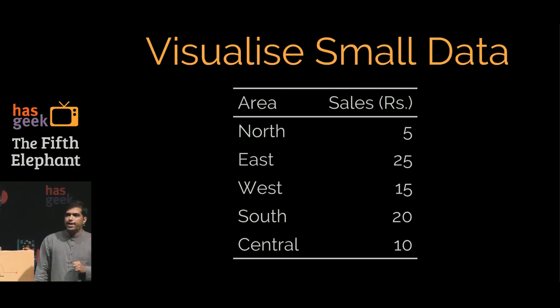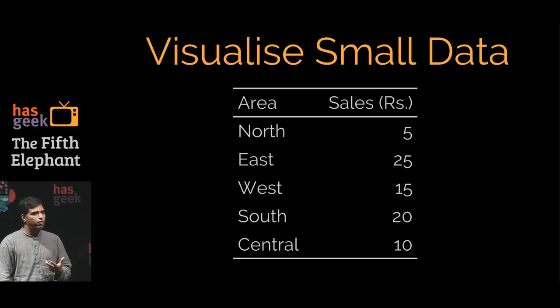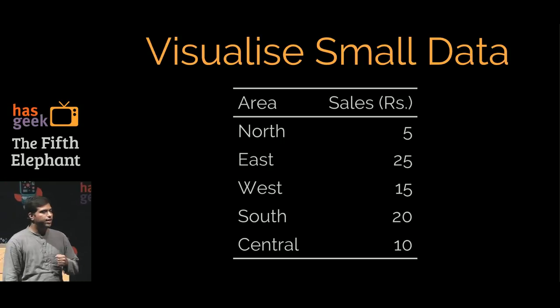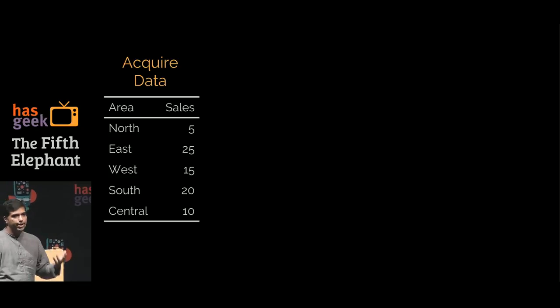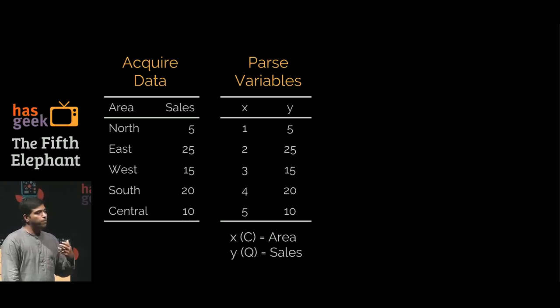What is small data? Let's take the smallest possible data set that we can start with, just five observations. Area is one column, sales is the other column. The area is a categorical variable with five categories and sales is a quantitative number. If we were to visualize this variable, we would start with acquiring the data, parse it into variables. X is equal to area, categories one, two, three, four, five. And Y is a quantitative variable which is sales.